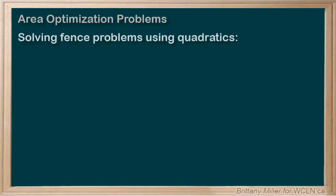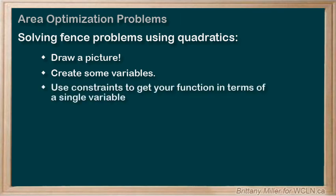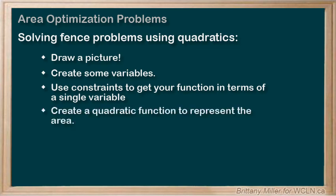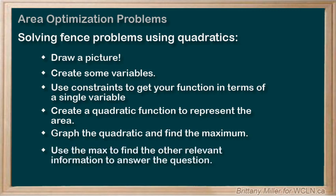In conclusion, here are our steps for solving fencing problems using quadratics. Step 1: Draw a picture. Then create some variables — usually the length and the width of the shape, though this could change depending on the shape. Then figure out your constraints and use them to get one variable in terms of the other, as we did when we got y in terms of x. Use that constraint to create a quadratic function for the area, then graph that quadratic to find the maximum. Once you find the maximum, use that value to find any other relevant information needed to answer the question.